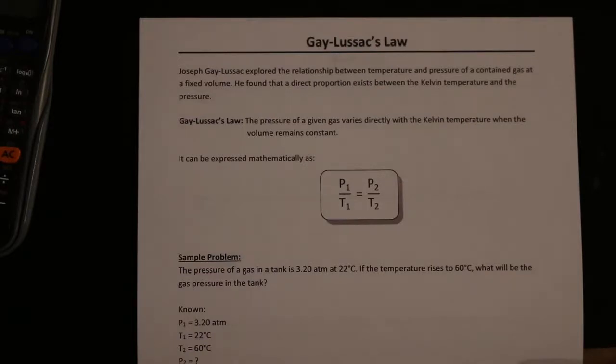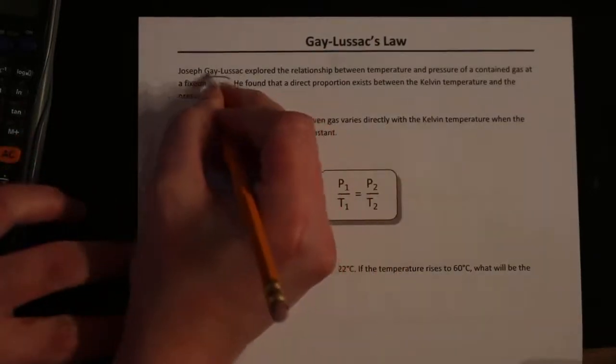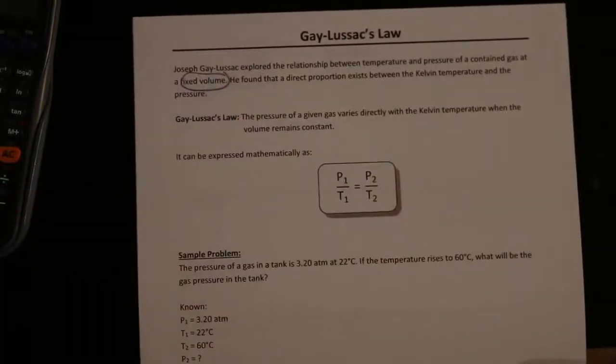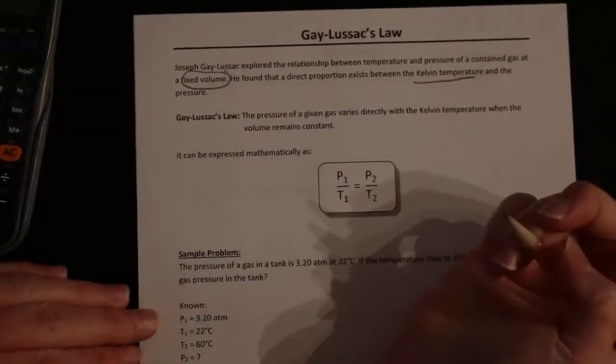This one is going to be dealing with the pressure of the gas and its temperature in Kelvin. Gay-Lussac's law was discovered by Joseph Gay-Lussac, who explored the relationship between temperature and pressure of a contained gas at a fixed volume. That's something very important to realize - the volume is not changing at all. The only variables we're dealing with here are pressure and temperature. He found that a direct proportion existed between the Kelvin temperature and the pressure. You have to make sure your temperature is in Kelvin.